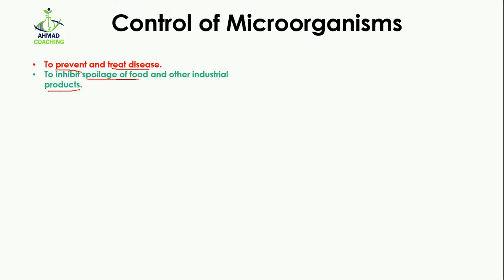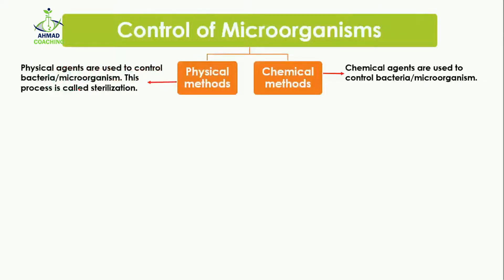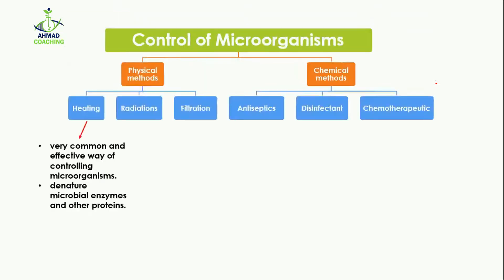There are two main methods to control microorganisms to prevent disease and inhibit spoilage of food. One is the physical method and the other is the chemical method. When we talk about physical methods, we use physical agents to control bacteria or microorganisms — this process is known as sterilization. In chemical methods, chemical agents are used to control bacteria and microorganisms.